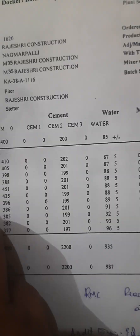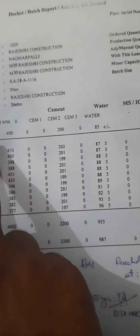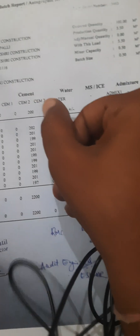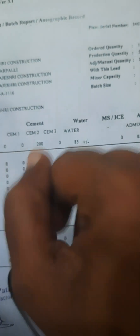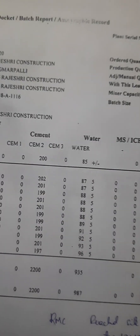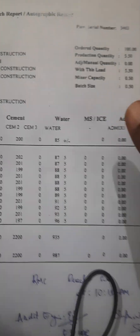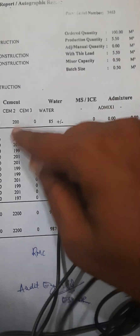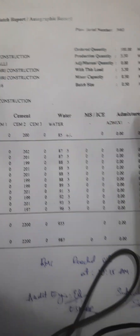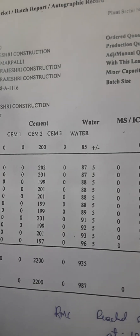The mix ratios per 0.5 m³ batch are: sand 375 kg, 12 mm aggregates 150 kg, 20 mm aggregates 400 kg, cement 200 kg, and water 85 kg. For M35, the minimum water-cement ratio required is 0.45. Here, 85 divided by 200 gives approximately 0.45, so this is acceptable.